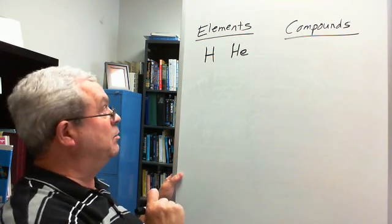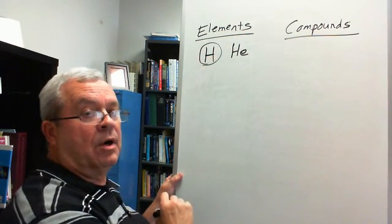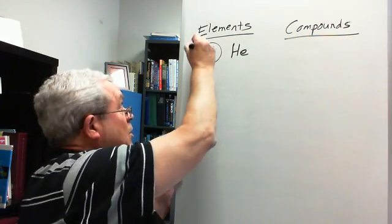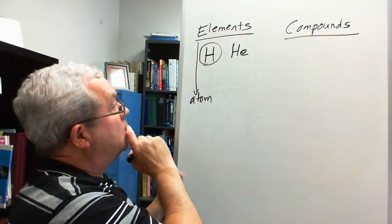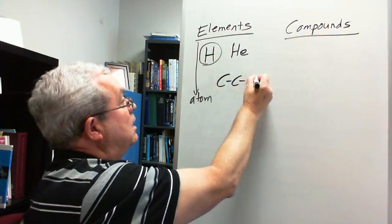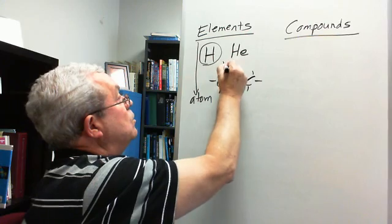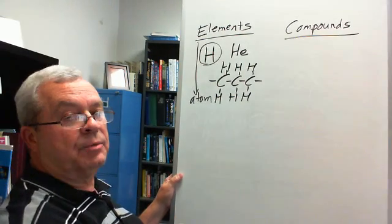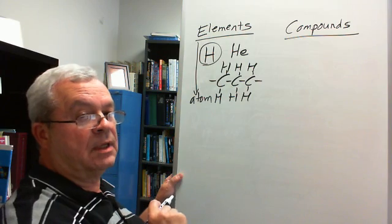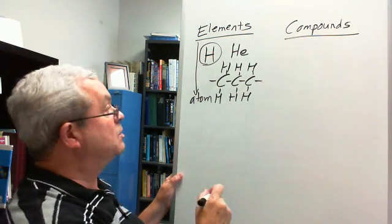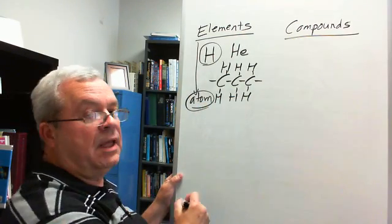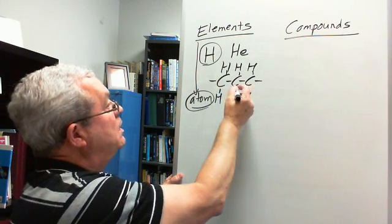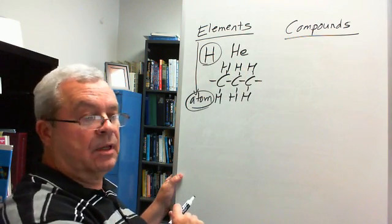When you write that letter, it stands for one particle of that element. So this H stands for one particle of hydrogen — that would be a hydrogen atom, the smallest particle of an element. Similarly, C represents one carbon atom. The H doesn't just represent hydrogen in general; it represents one hydrogen atom. The little sticks in diagrams represent chemical bonds.